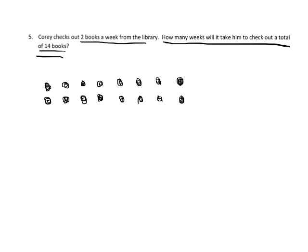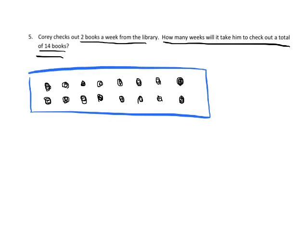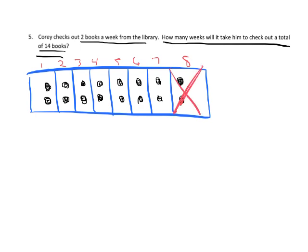Now, I'm going to take this array, and it's going to end up looking like a tape diagram. Because if I look at this, each column represents a week. So I can see that it's going to take 1, 2, 3, 4, 5, 6, 7, 8. Oops, I don't want 8. I only want 14 books. So I don't need this week. I went too far.